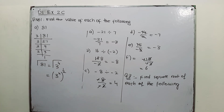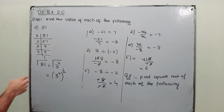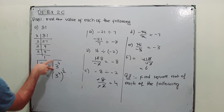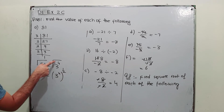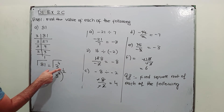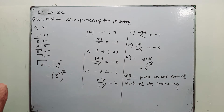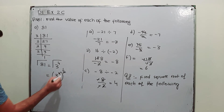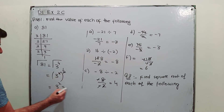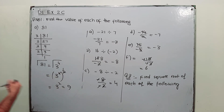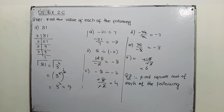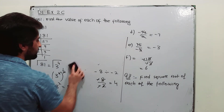So in exponential form, the square root becomes the power 1 over 2. The 4 and 2 cancel, leaving 3 to the power 2, which is 9. So the answer for the square root of 81 is 9.